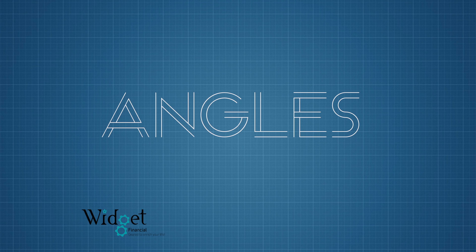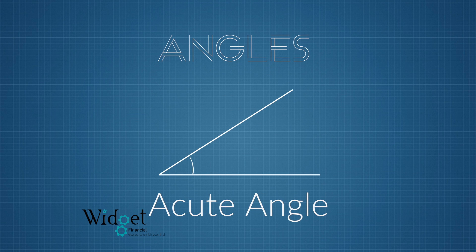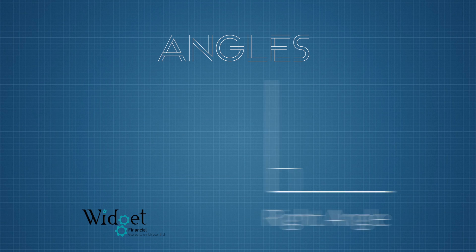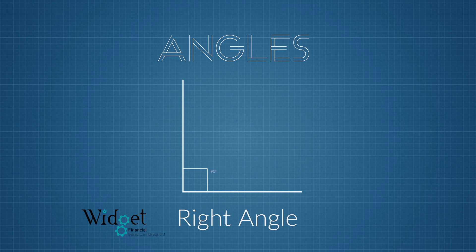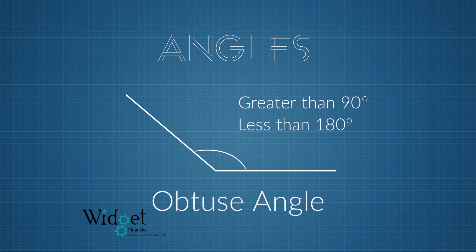An angle measures the size of a corner on a shape. There are three basic types of angles. There is an acute angle, which is an angle that is less than 90 degrees. A right angle, which is an angle that is exactly 90 degrees. And there is an obtuse angle, which is an angle that is greater than 90 degrees but less than 180 degrees.